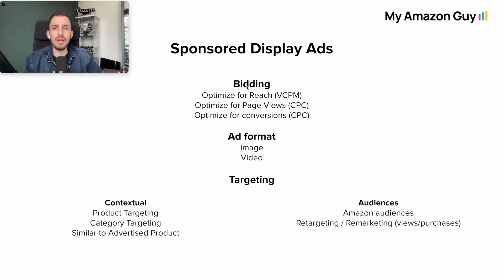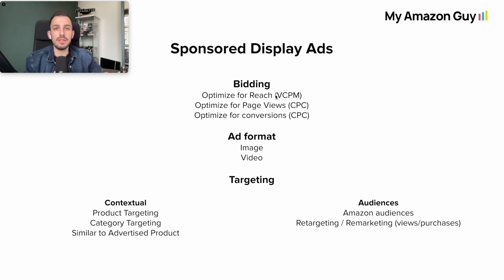In Sponsored Display ads there is a bidding type different from Sponsored Brand and Sponsored Product, which is vCPM — optimize for reach. This means the advertiser will be charged per 1,000 viewable impressions. The critical point is that the advertiser gets charged after one second of viewing the ad. This needs to be used carefully, and different bidding types should be tested to see which one works better for you.